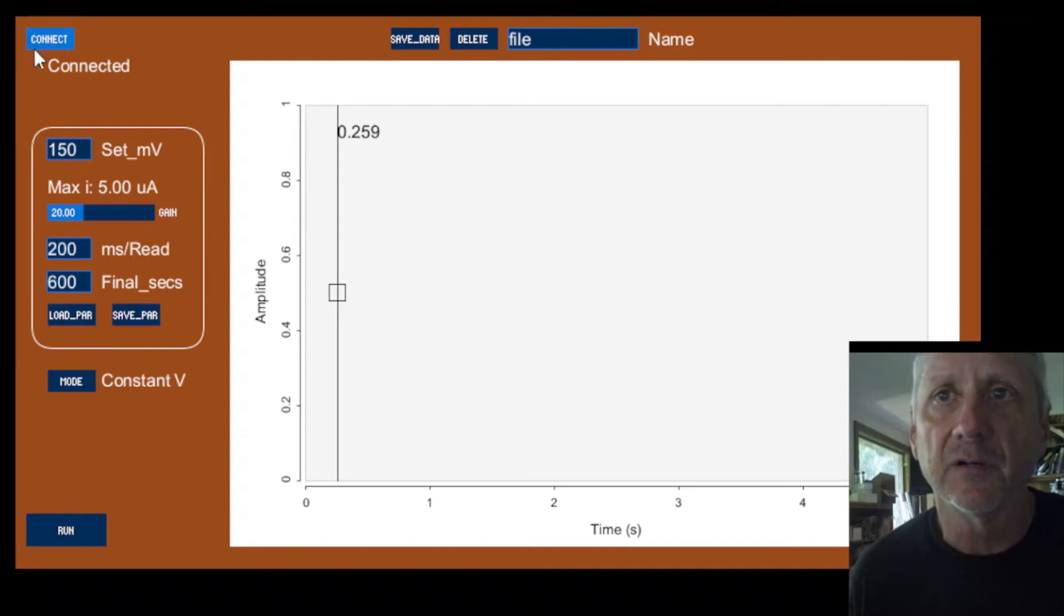Alright, so we are connected to the Raspberry Pi. We have a bunch of different parameters we can input. We have a voltage set. We can set the millivolts. It's 150 now. We can change that. We can change the gain.